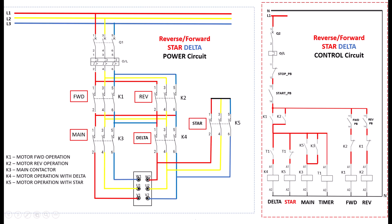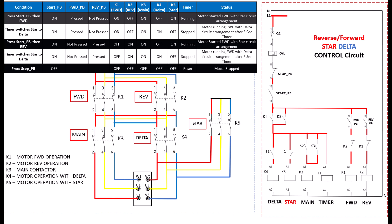The main goal in the star delta motor configuration is to initially run the motor in star configuration, which limits the starting current. After a few seconds, a timer shifts the motor to delta configuration, enabling it to operate at full speed and deliver its rated power. I aim to explain the reverse forward star delta control circuit operation through specific scenarios to ensure 100% clarity and understanding of its functionality. My goal for this video isn't just to gain views, but to provide you with complete clarity.